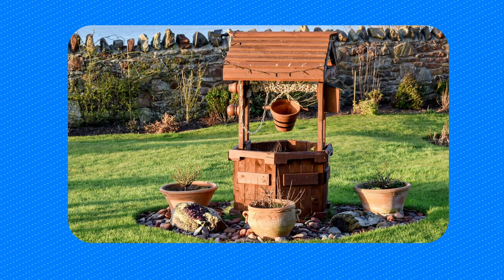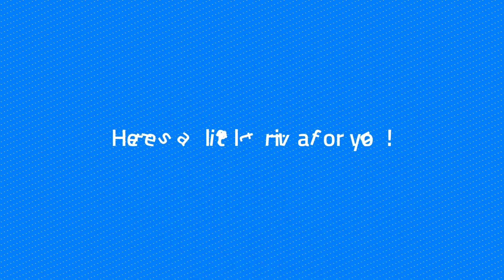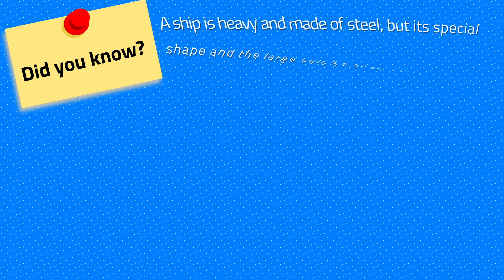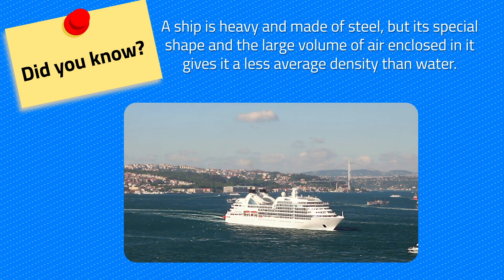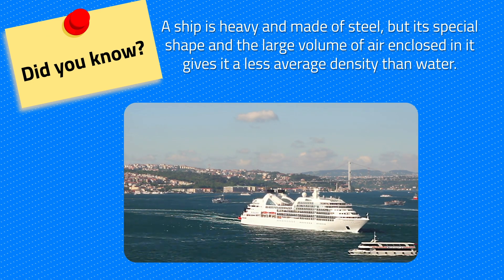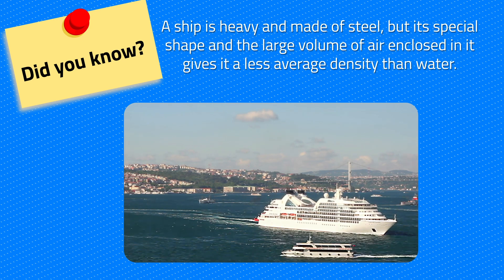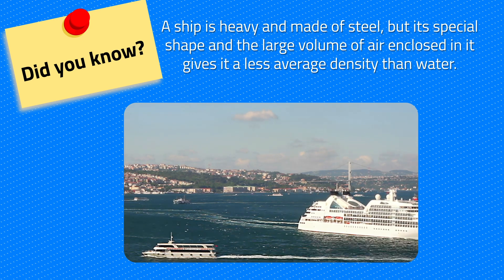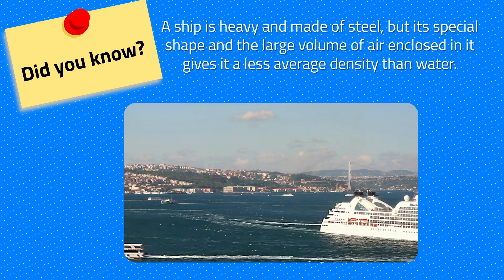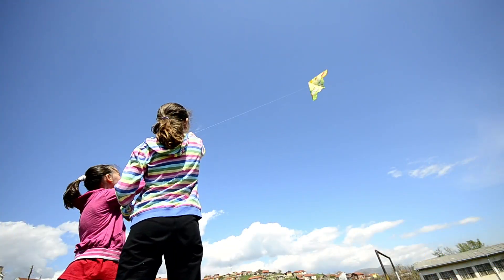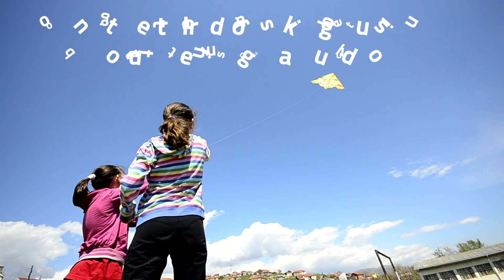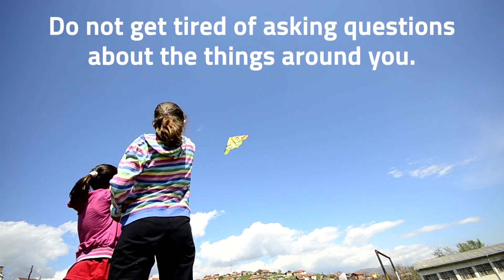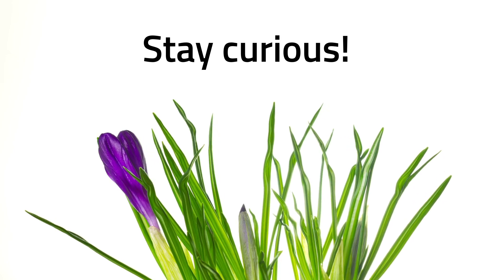We're almost done, but before you go, here's a little trivia for you. Did you know? A ship is heavy and made of steel, but its special shape and the large volume of air enclosed in it gives it a less average density than water. And that's the reason why it floats in the ocean. There are many things to be curious about. Do not get tired of asking questions about the things around you. Stay curious! See you next time!